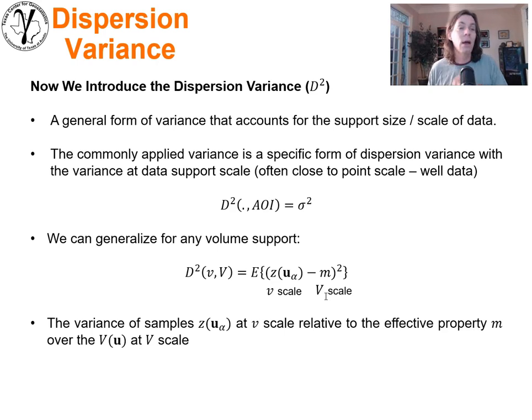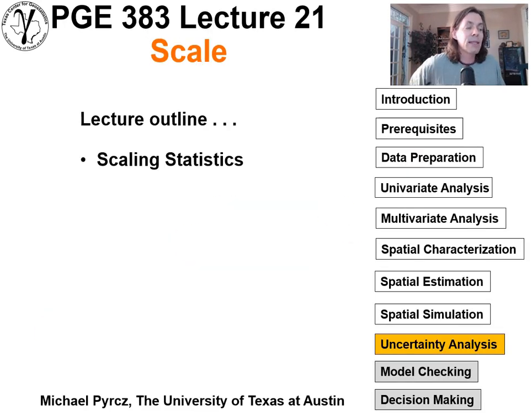If you did that, you would actually calculate the dispersion variance little v big V. We've drawn some parallels here, but we'll show you shortly that there's much more sophisticated ways that we can deal with dispersion variance, calculate it, and use it for the purpose of supporting our modeling and being able to account for scale. That's the end of the introduction of the concept of gamma bar and a little bit of discussion of dispersion variance. In the next section, we'll get much more into how we work with these to scale statistics—we'll go much deeper into dispersion variances and show some examples.